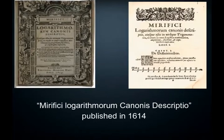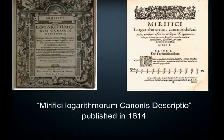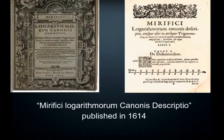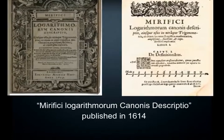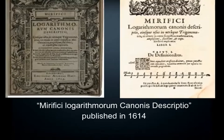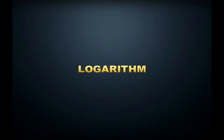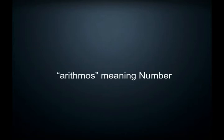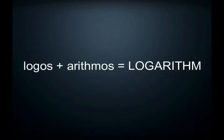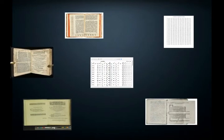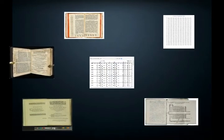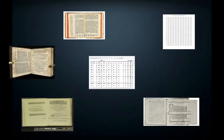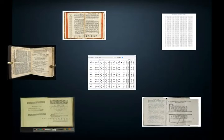His book contained 57 pages of explanatory matter and 90 pages of tables of numbers related to natural logarithms. He coined the term from two ancient Greek words: 'logos,' meaning proportion, and 'arithmos,' meaning number — joining them together produced the word 'logarithm.' The technique was found to be very accurate, and his work was translated into different languages and widely printed.